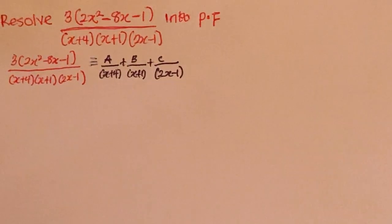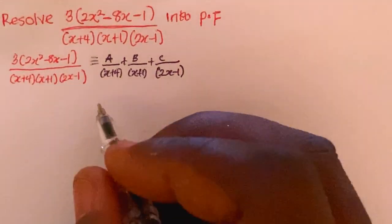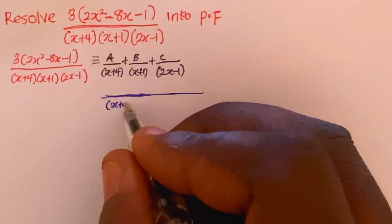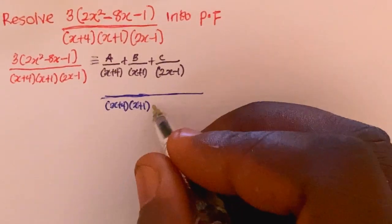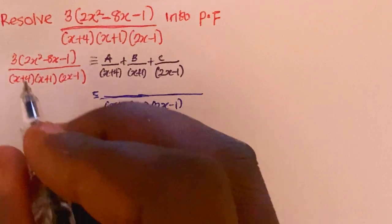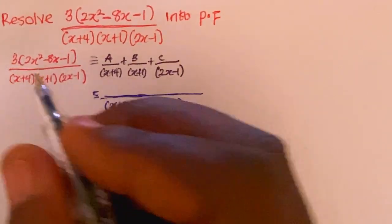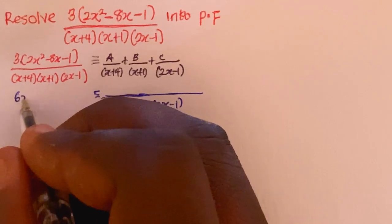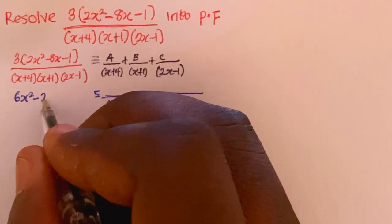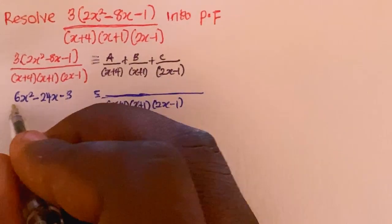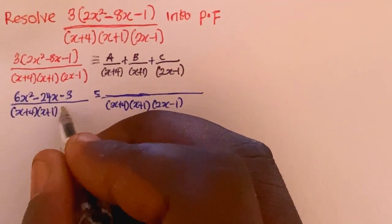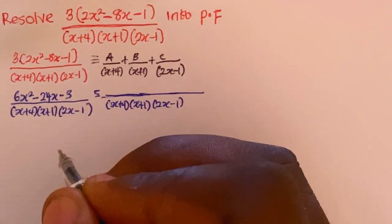The next step is to find the LCM. In this case the LCM factors are (x+4), (x+1), and (2x-1). Everything here is equivalent to this expression. Opening the brackets, I'm going to have 6x squared minus 24x minus 3, divided by (x+4)(x+1)(2x-1).